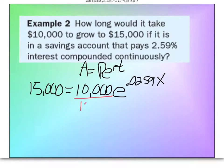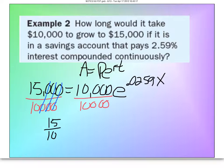So I'll divide by $10,000 on both sides. And I'm going to notice that all these zeros cancel, so really what I have is $15,000 over $10,000, or 1.5. And E to the 0.0259X power.